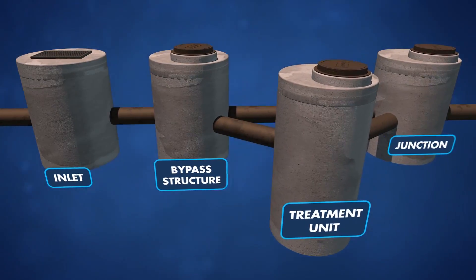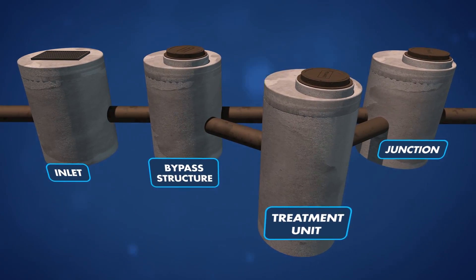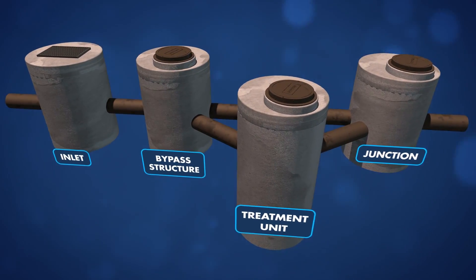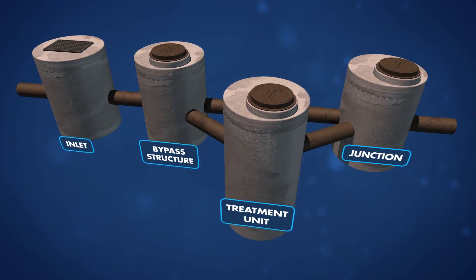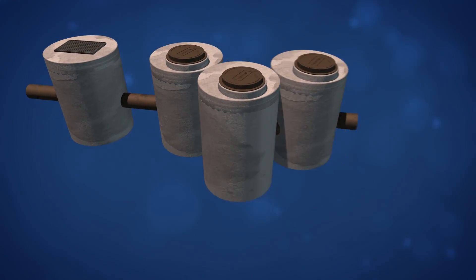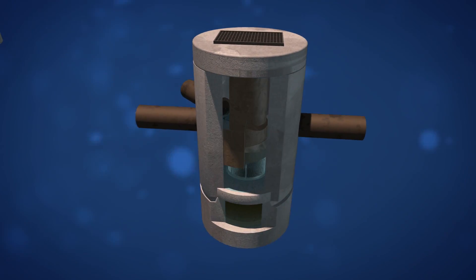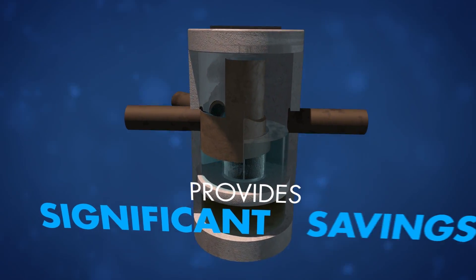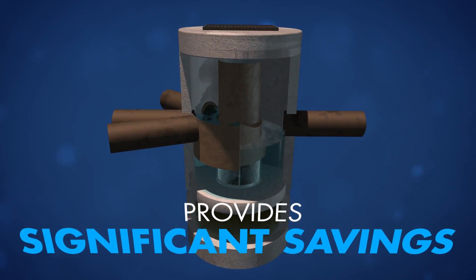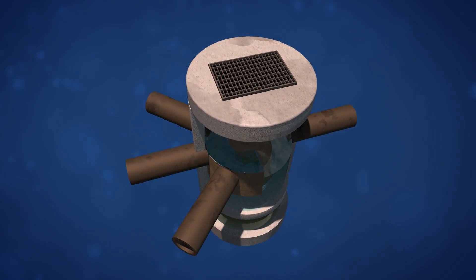Many stormwater treatment systems require multiple structures to direct the design flow rate to the treatment structure and bypass high intensity storms. The configuration flexibility of the CDS allows it to replace multiple structures, providing significant savings. The CDS can accept multiple inlet pipes at a variety of angles.